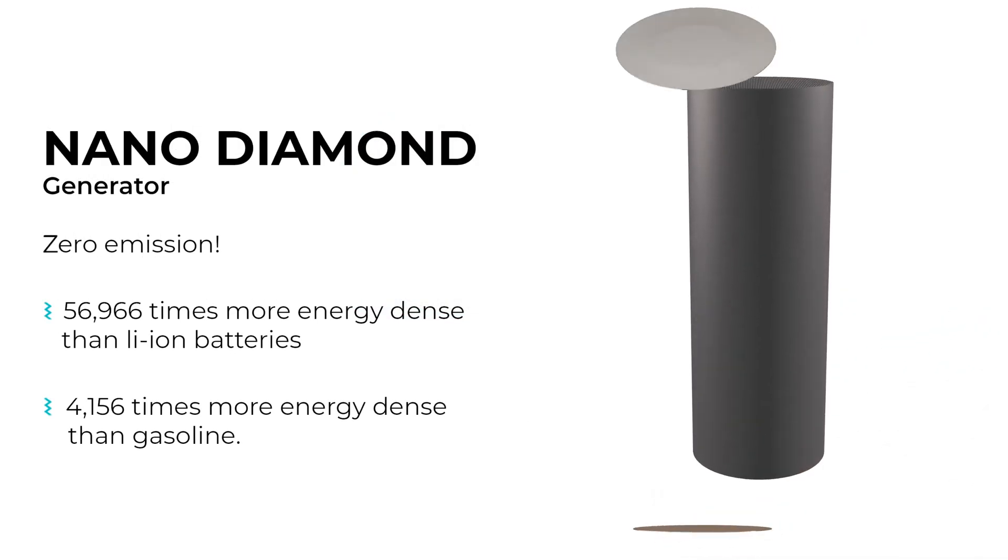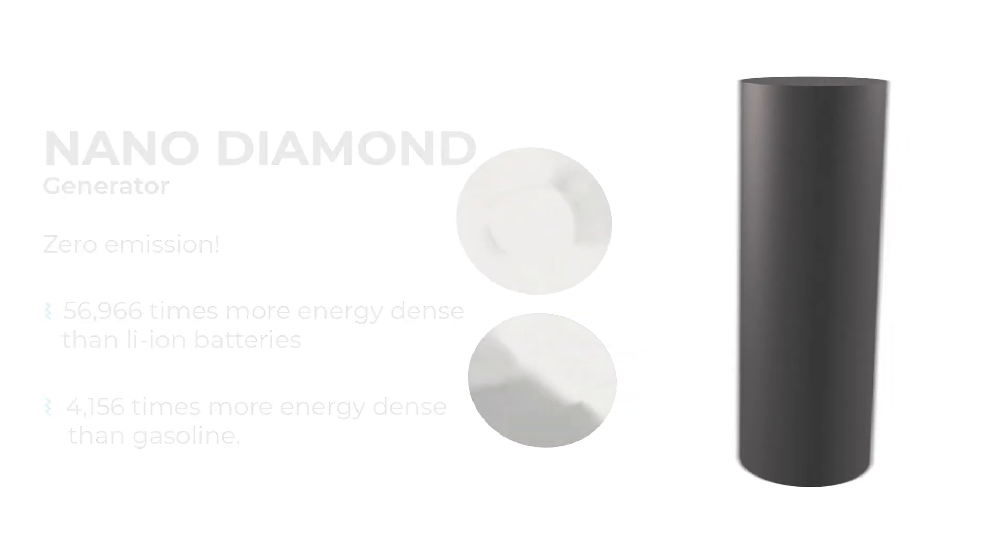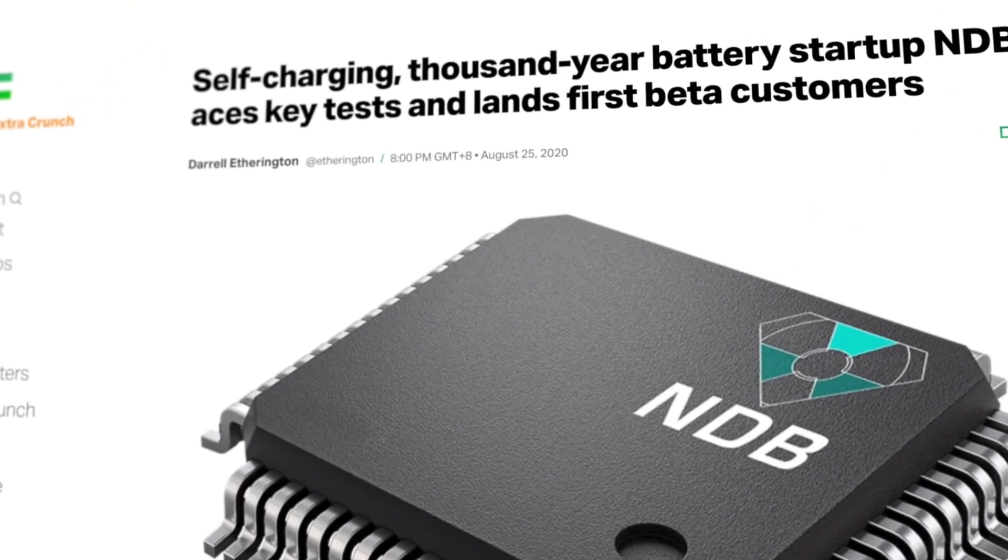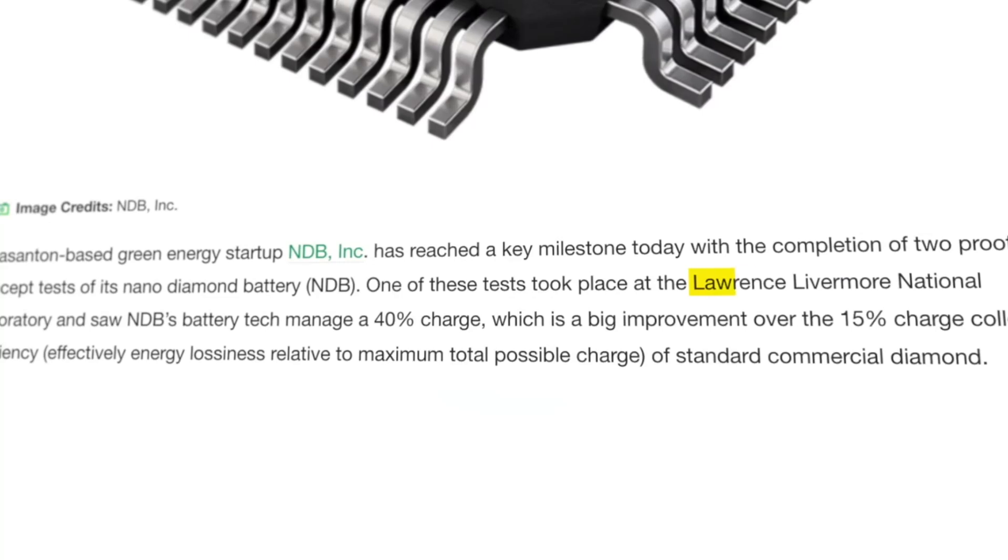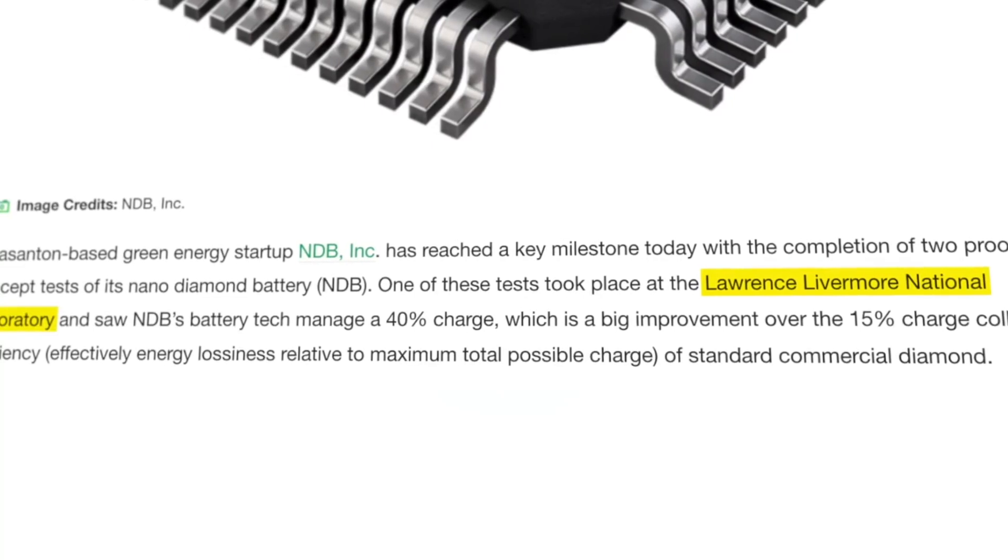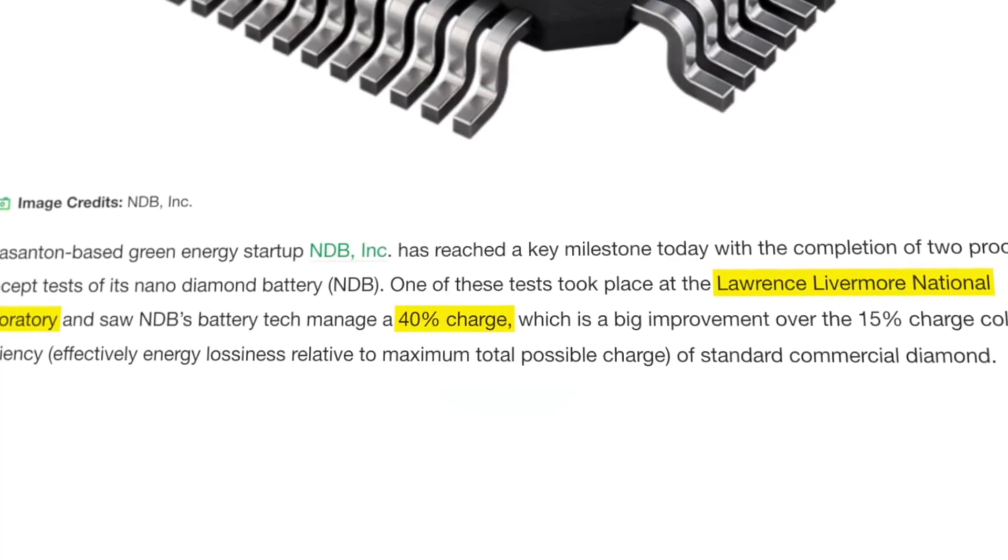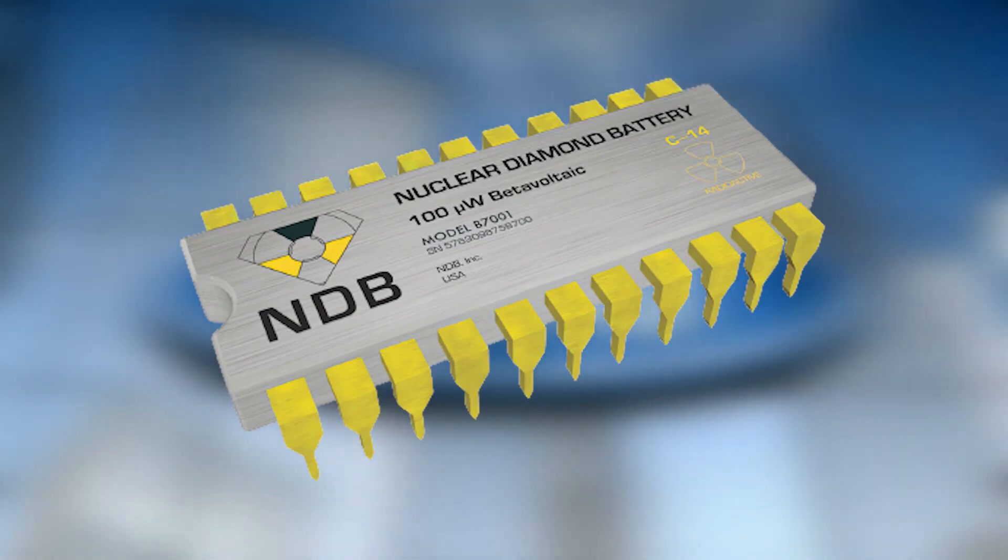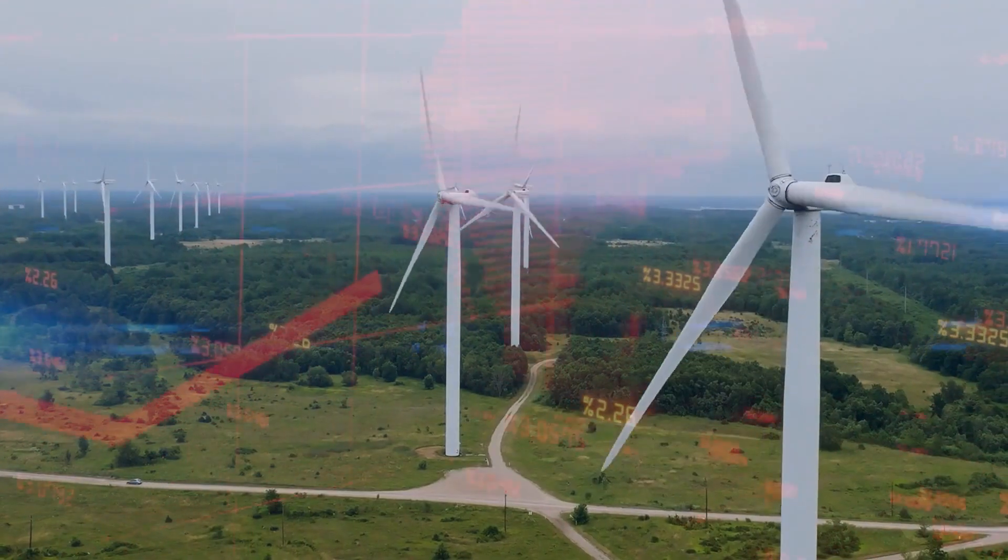However, it has one major drawback, the relatively low radioactivity of this isotope. The Americans from NDB claim to achieve an energy conversion efficiency of up to 40%, allowing the creation of a battery with a power output of the same 100 microwatts. Yet, such super-optimistic figures immediately raise doubts among experts.